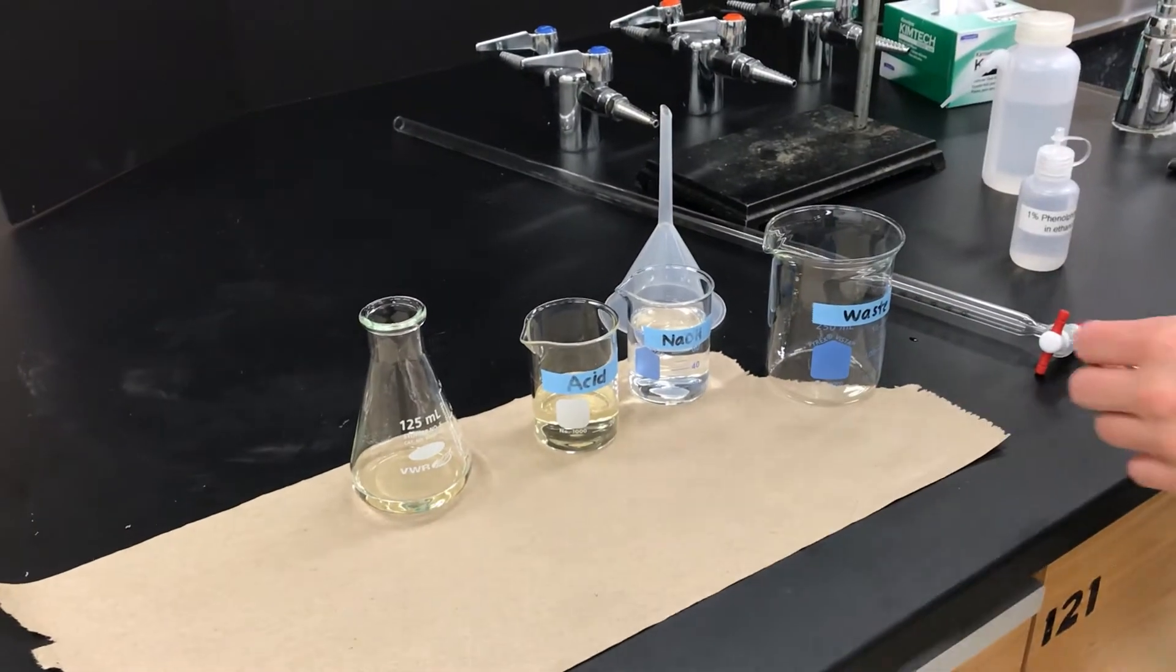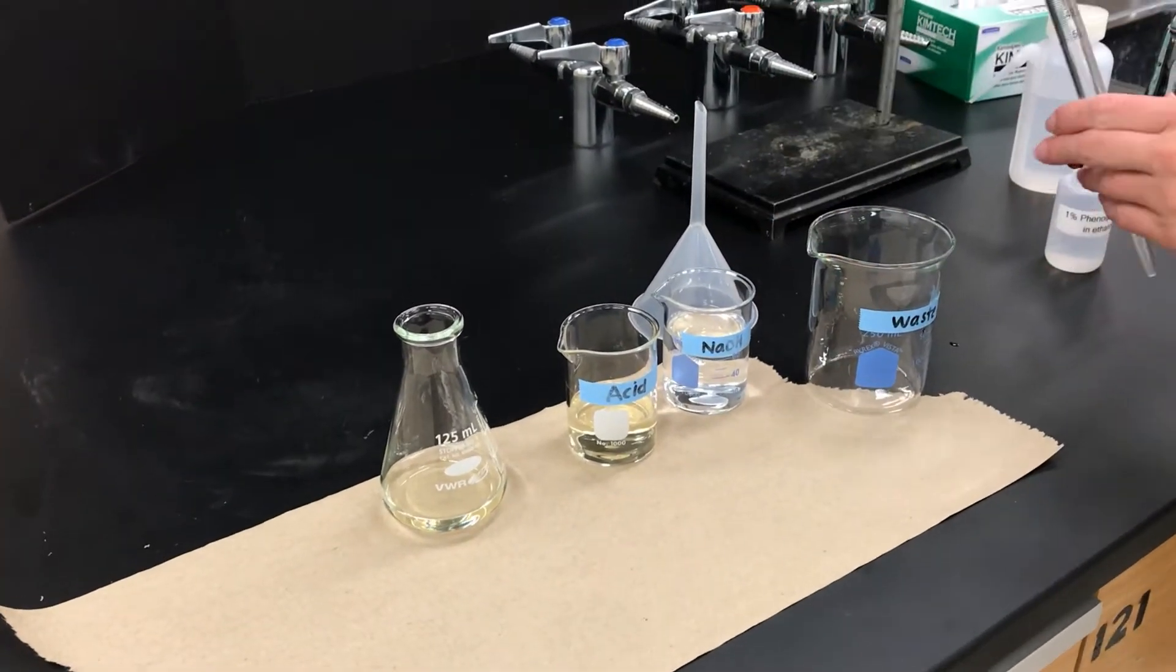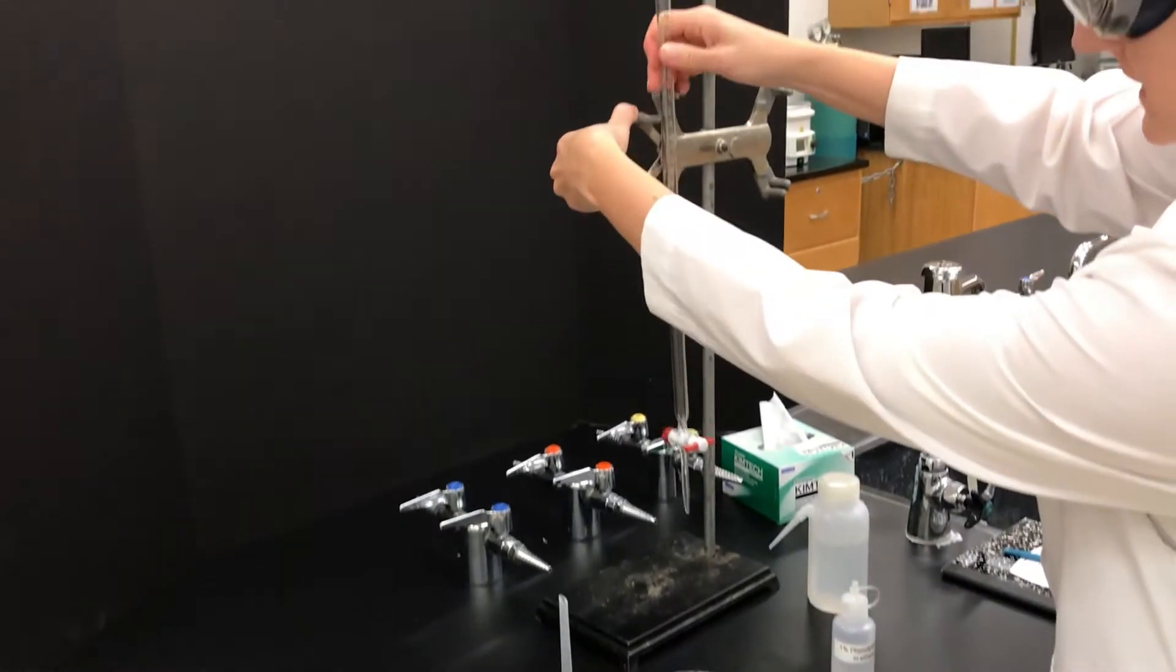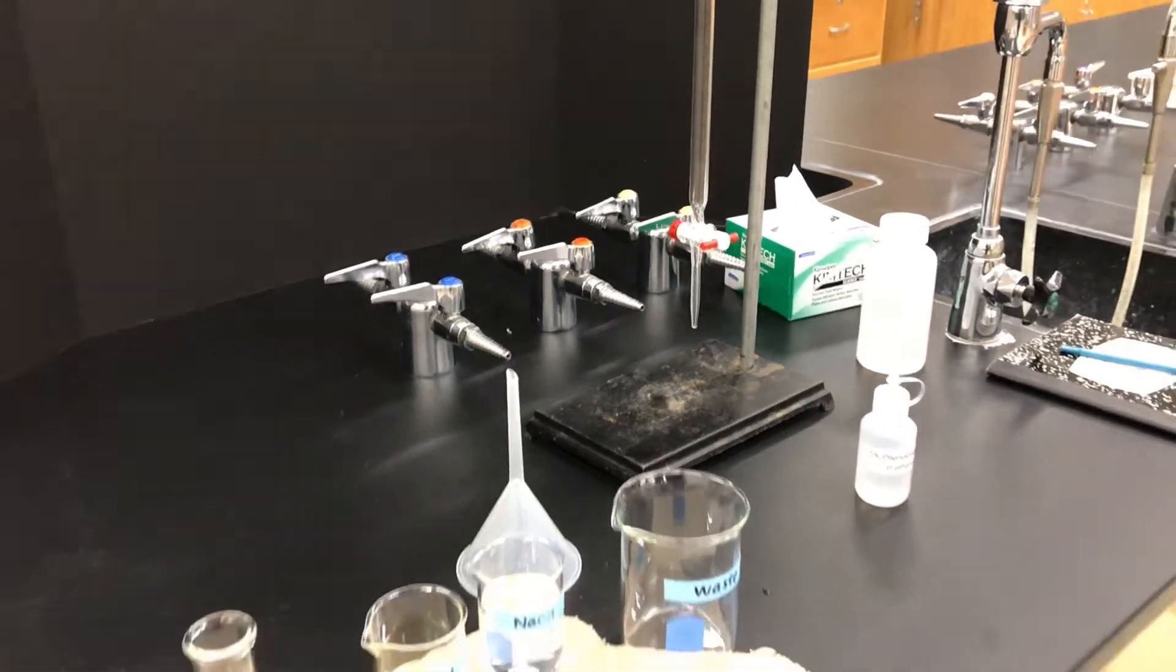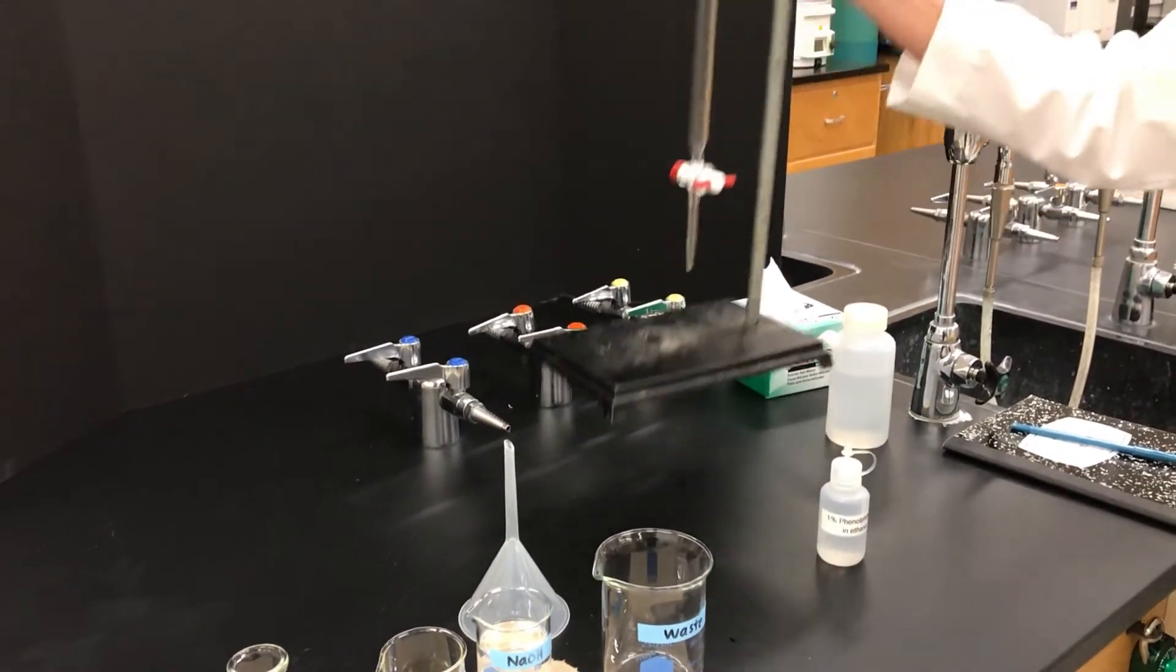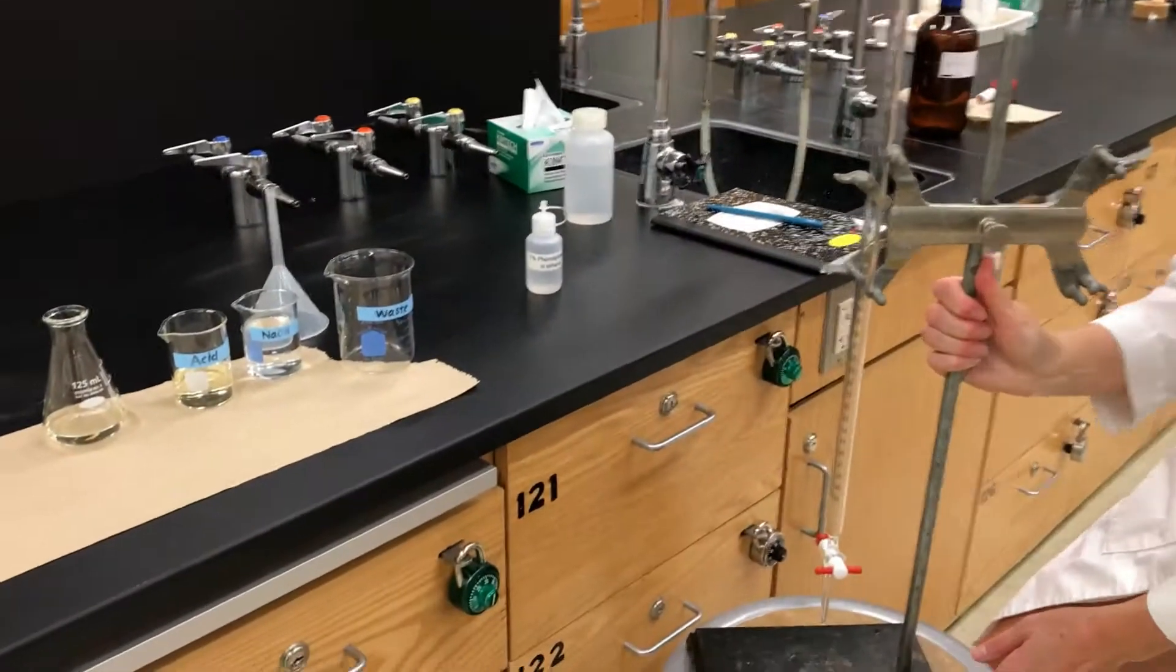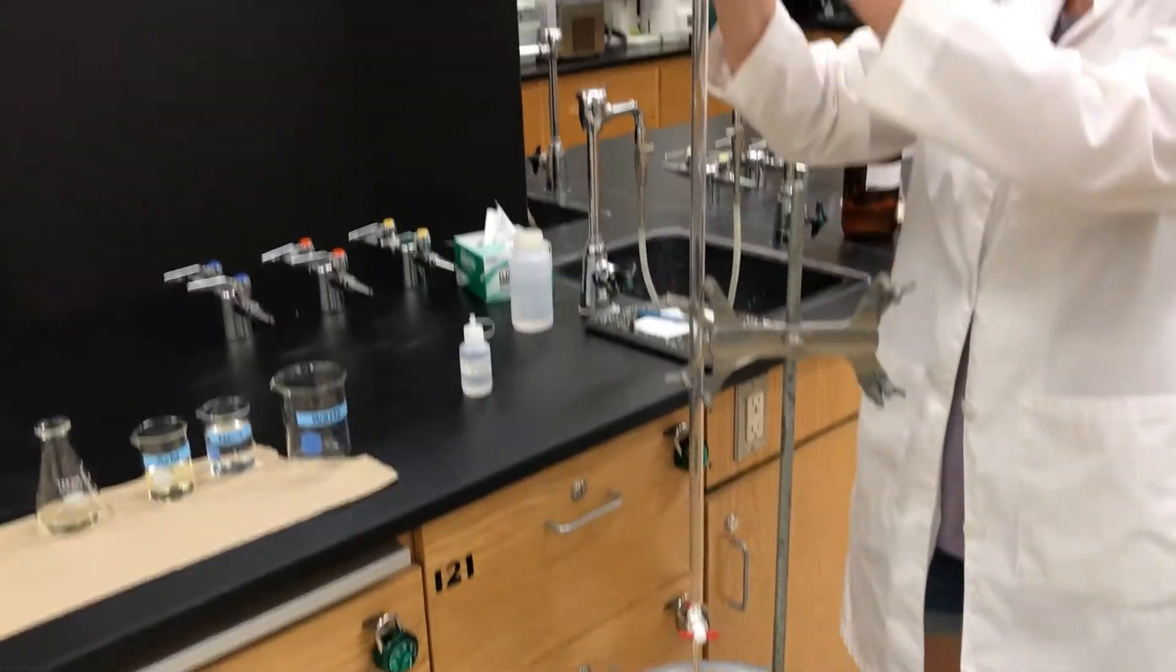Next we'll get our burette ready and secure it to a ring stand using a burette clamp. Because it's such a tall piece of glassware, often I bring it down onto a chair so that you can pour more at eye level instead of really straining your hand.